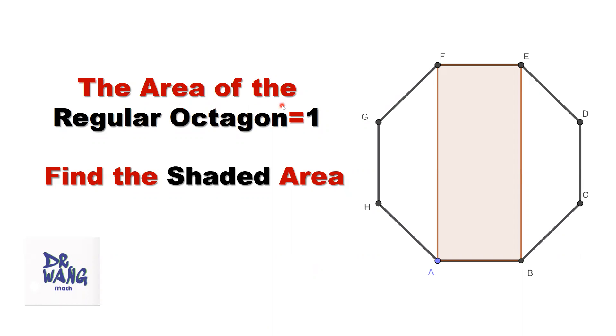If the area of this regular octagon is one, the total area, the question is to find the shaded area. We need to find the area of this rectangle.